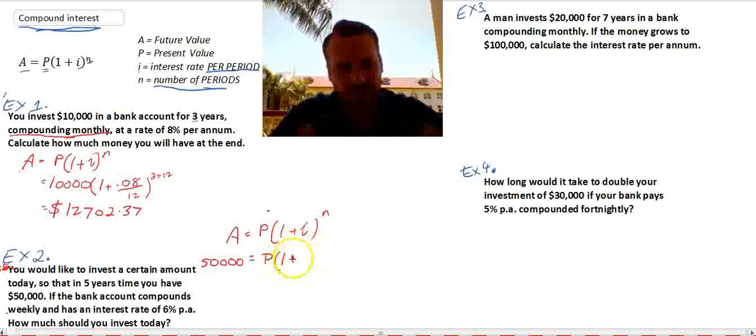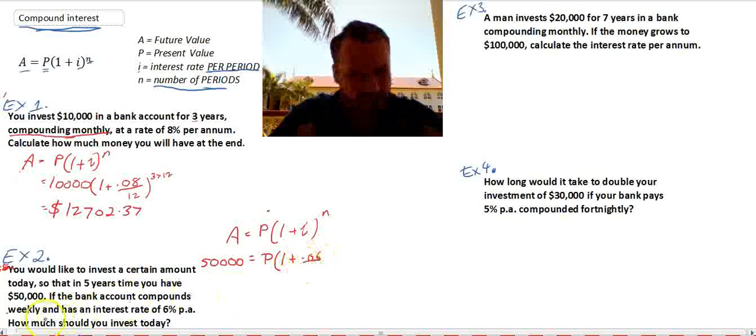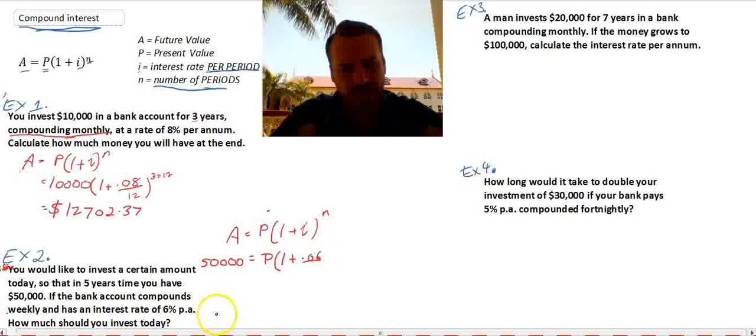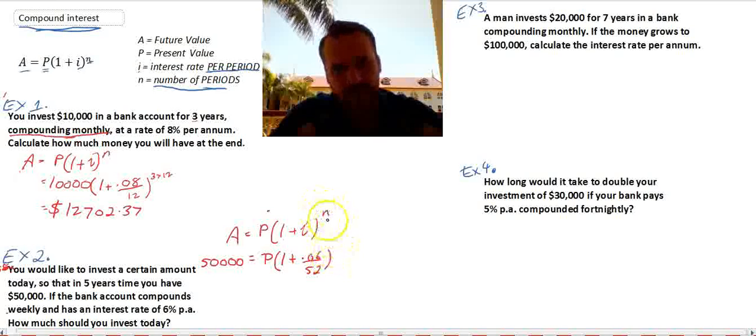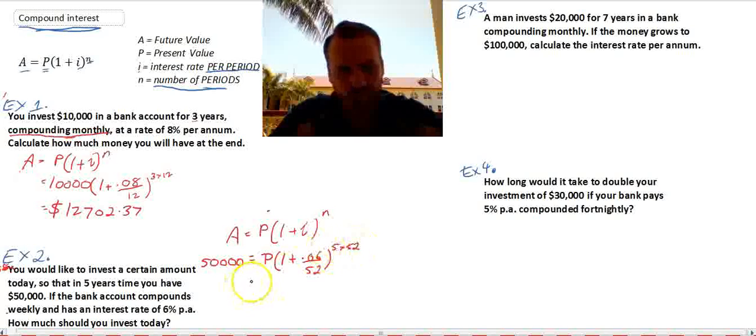And then it's 1 plus I to the power of N. So 1 plus I. Now the interest rate is 6%. I didn't mention it before. Make sure you express your interest rates as decimals, not percentages. So that's 0.06. But it's compounding weekly. So we don't need our interest rate per annum, which means per year. We need it per week. So we need to divide that number by 52. And then similarly for our number of periods, we're investing for five years, but our number of periods is going to be 5 times 52, because they're in weeks.